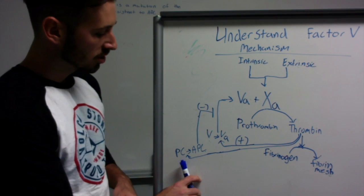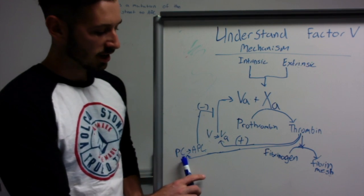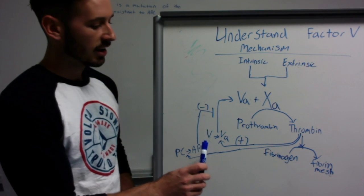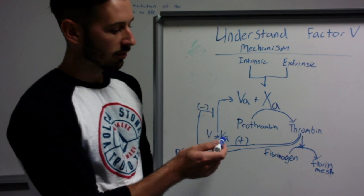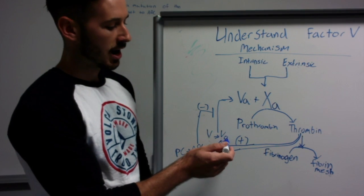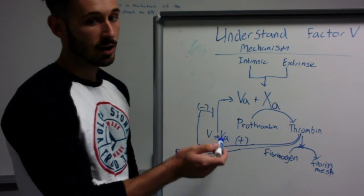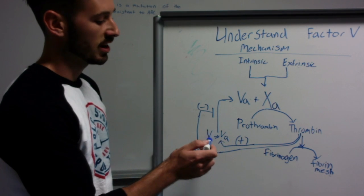Protein C is activated and it works as a negative regulator to cleave activated Factor V, or VA, back to its inactive form.